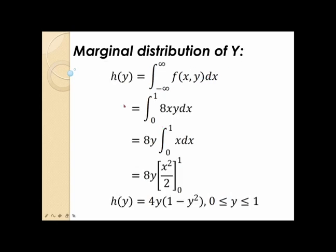Similarly, for the marginal distribution of y, h of y is equal to the integral from negative infinity to positive infinity of the joint density f of xy dx. The range for x is from y to 1, and 8xy is again the joint density function. When simplified and evaluated at x equals y and x equals 1, the marginal density of y is h of y equal to 4y times (1 minus y squared), for values of y from 0 to 1.